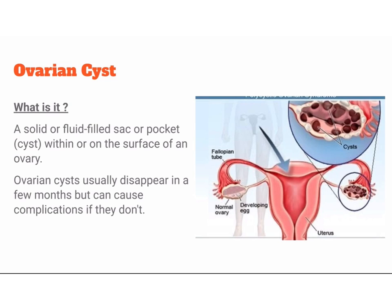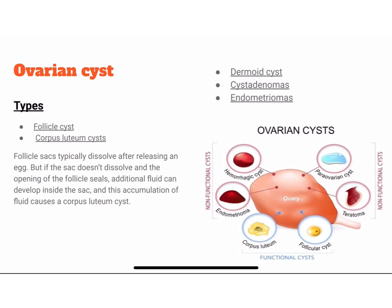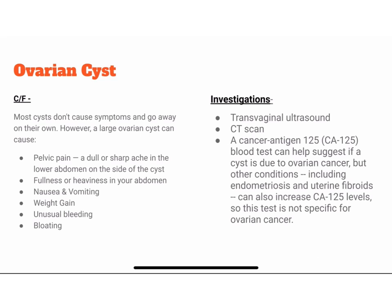An ovarian cyst is a solid or fluid-filled sac or pocket within or on the surface of an ovary. Ovarian cysts usually disappear in a few months but can cause complications if they don't. There are various types including follicle cysts, corpus luteum cysts, dermoid cysts, cystadenomas, and endometriomas. Most cysts don't cause symptoms and go away on their own. However, a large ovarian cyst can cause pelvic pain, fullness or heaviness in the abdomen, nausea and vomiting, weight gain, unusual bleeding, and bloating. Investigations include transvaginal ultrasound, CT scan, and CA-125 blood test, which can help suggest if a cyst is due to ovarian cancer.